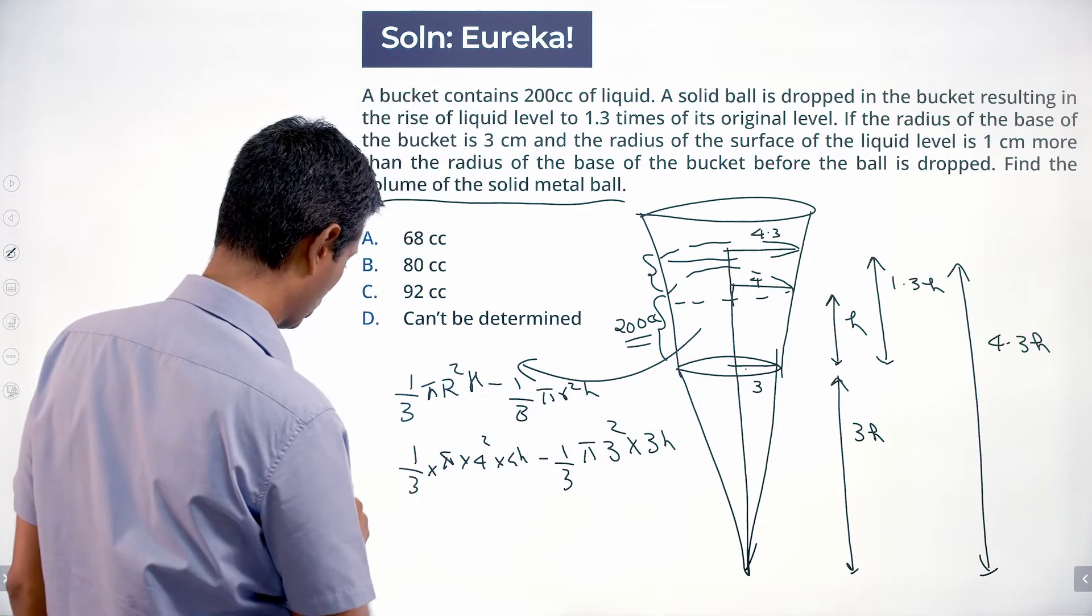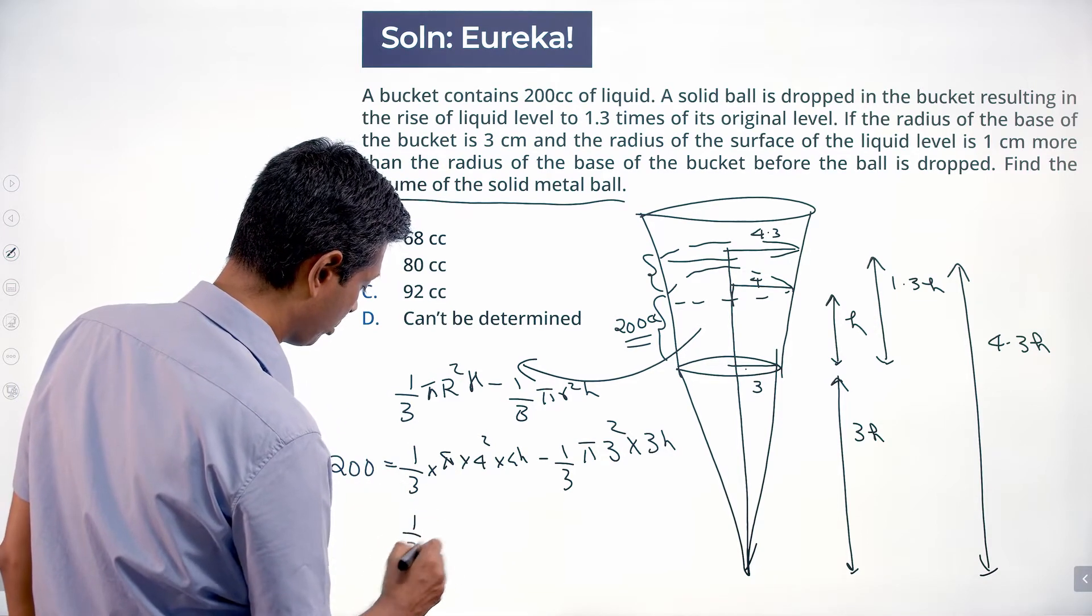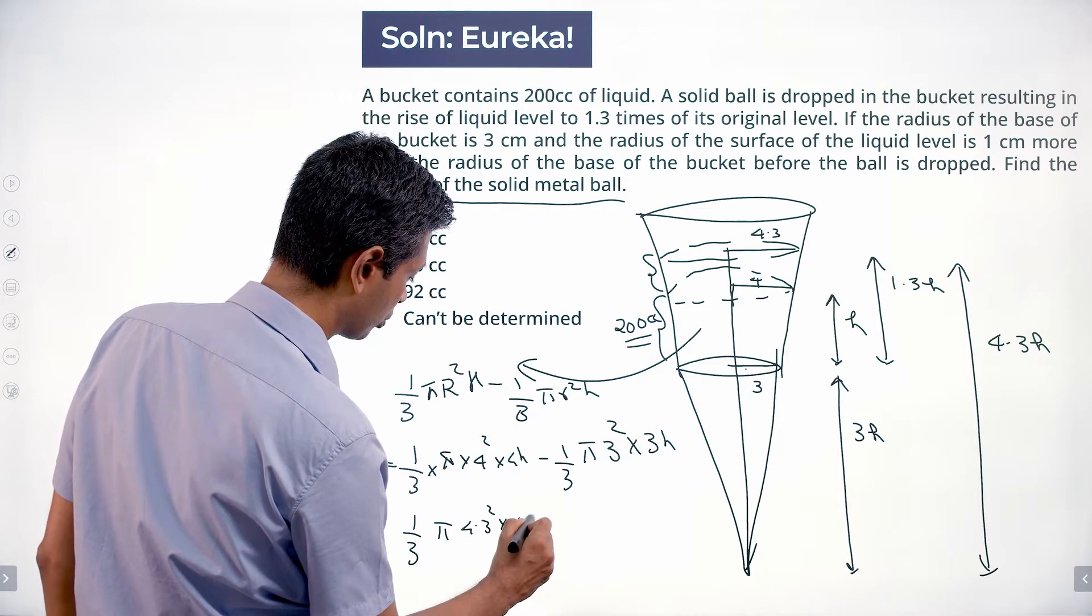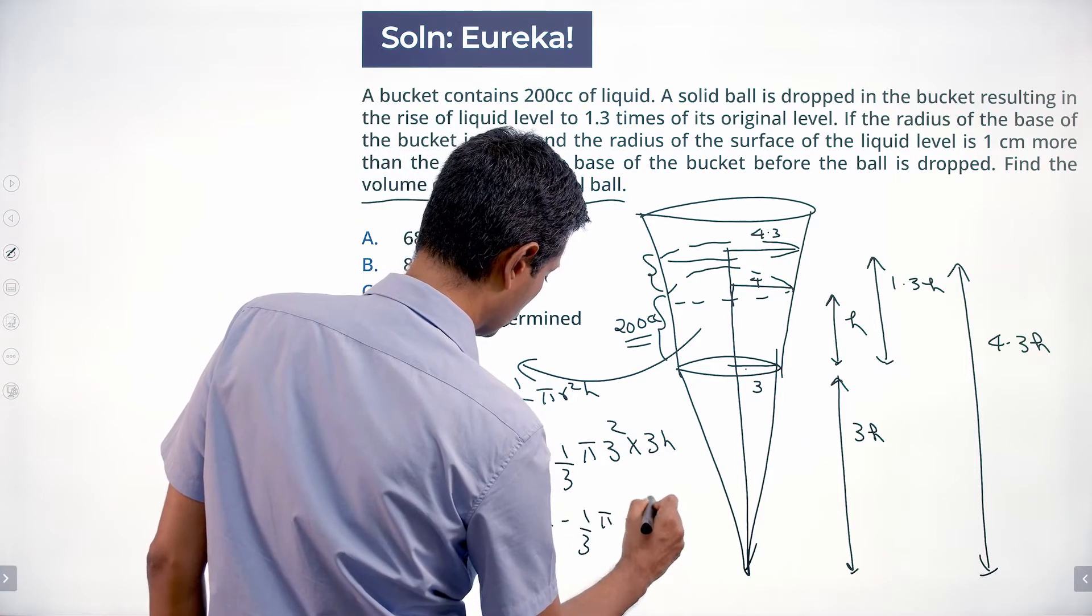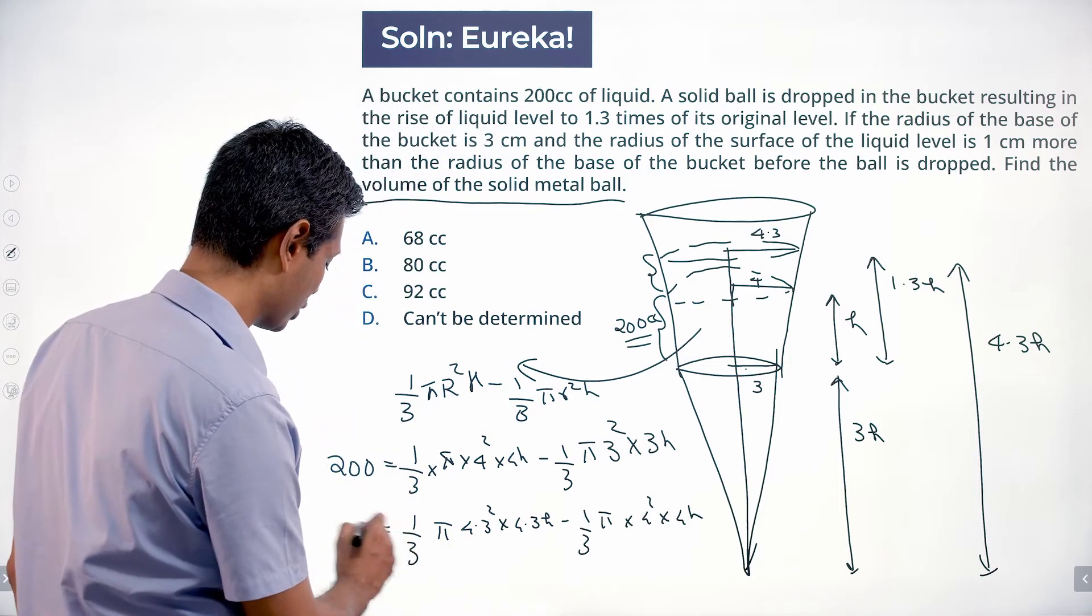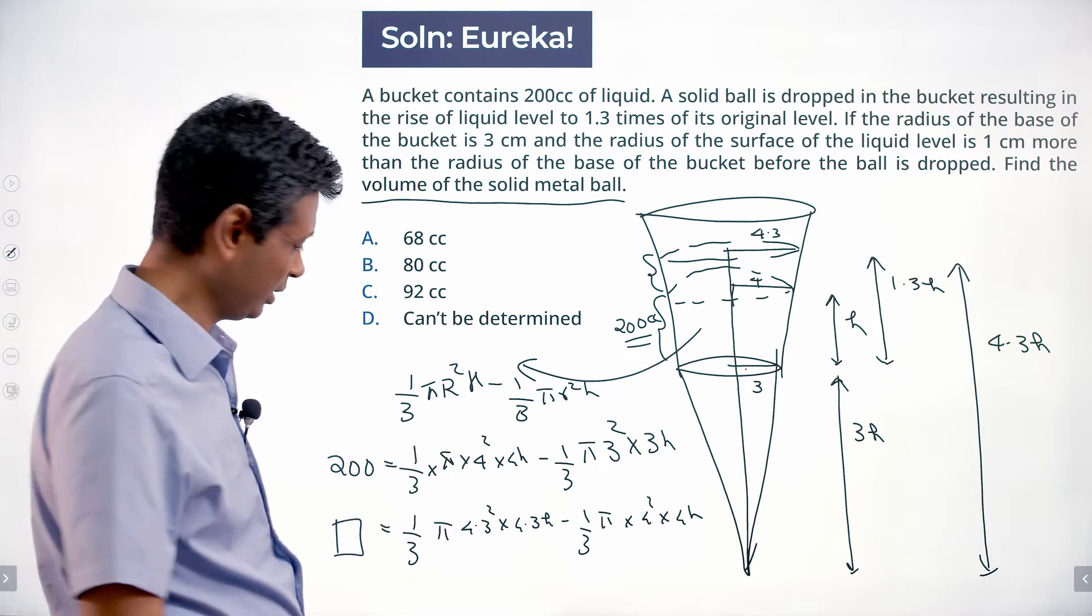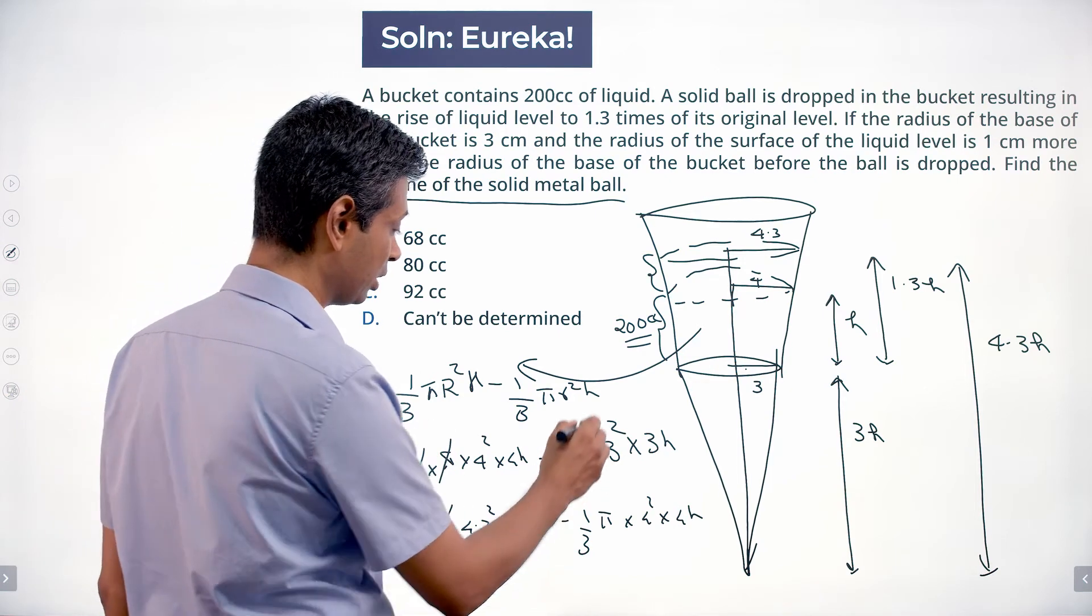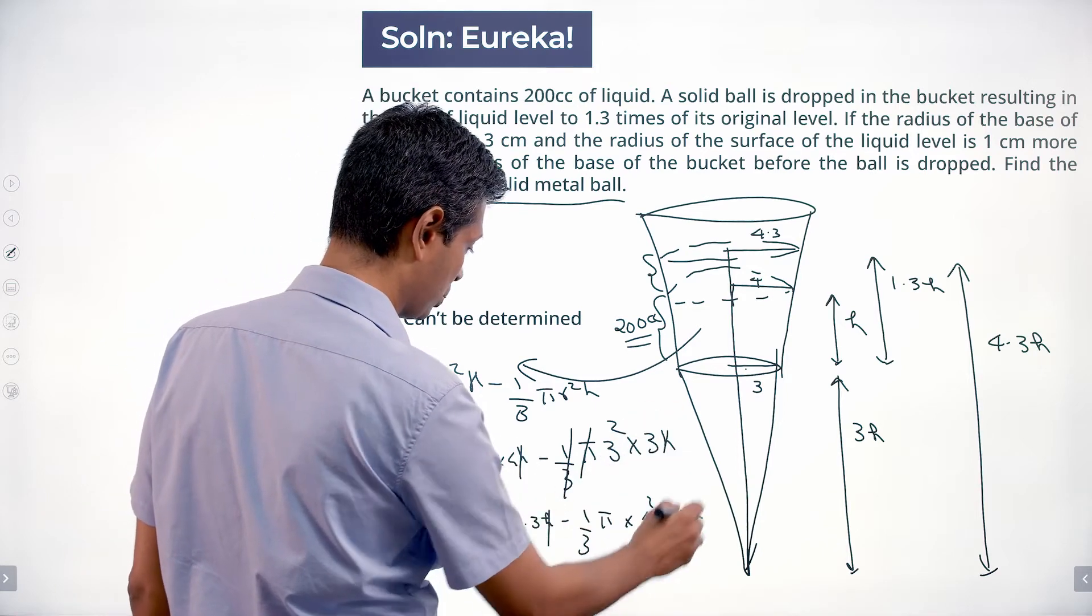So how do I find that? This is 200, we need to find 1/3 π × 4.3² × 4.3h minus 1/3 π × 4² × 4h. After this, this just becomes a ratios question. So I'm not going to think about it as an equation, I'm going to think about it as a ratio. Something is linked here, that means this 1/3π will disappear, the h will disappear. 4³ minus 3³ is linked to 200.